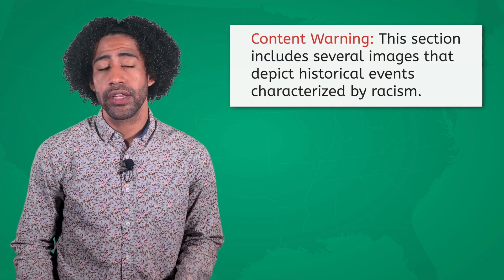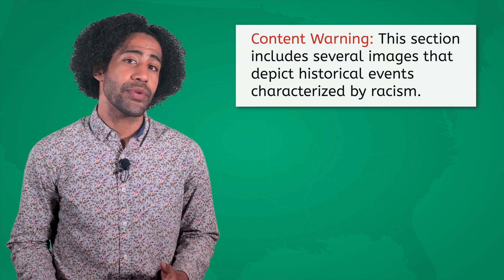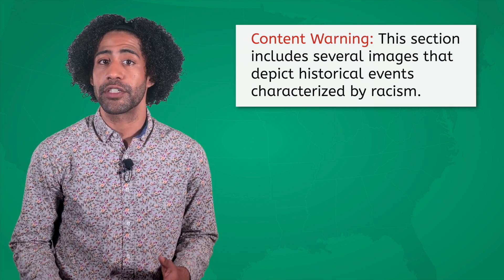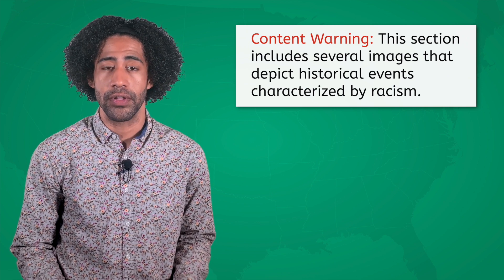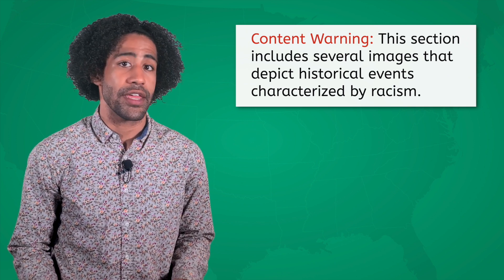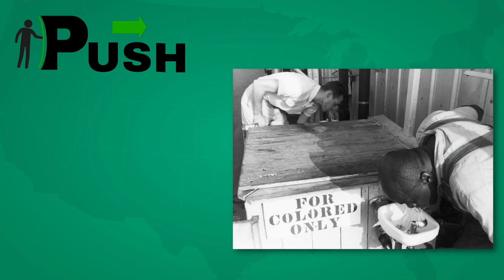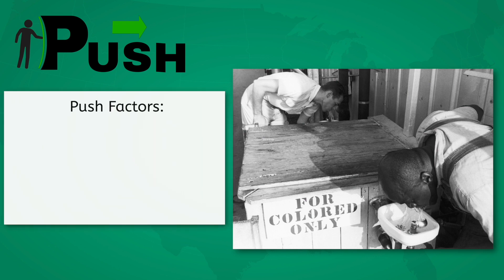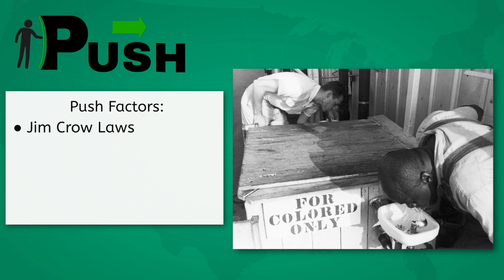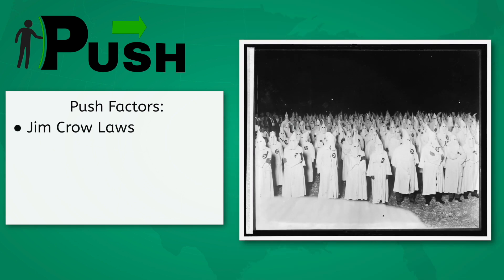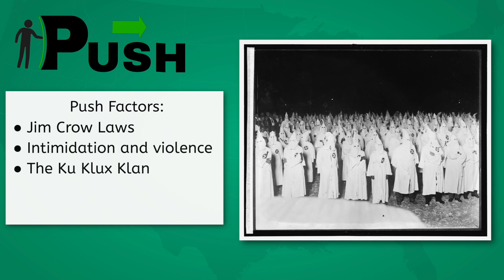This section includes images that depict historical events characterized by racism, for the purpose of explaining the push factors for Black people from parts of the American South during the late 19th and early 20th centuries. The South, where the majority of Black Americans lived during this time period, was filled with challenges. They lived under the oppressive laws of the Jim Crow era, which enforced strict racial segregation. In addition, they faced intimidation and violence from the racist group the Ku Klux Klan, meaning many Black citizens were not safe in their own homes.